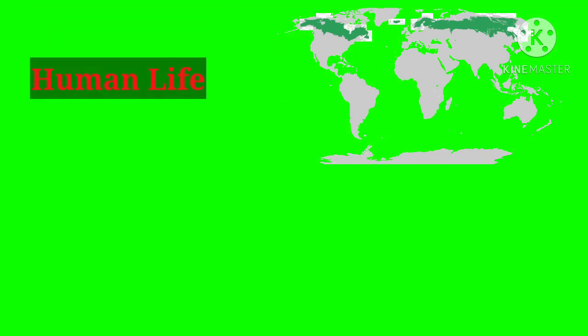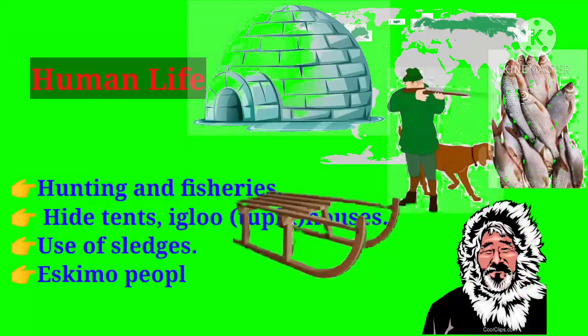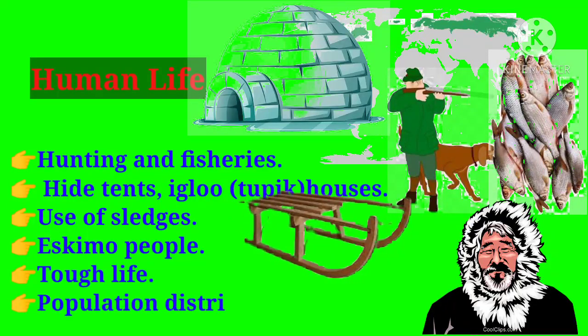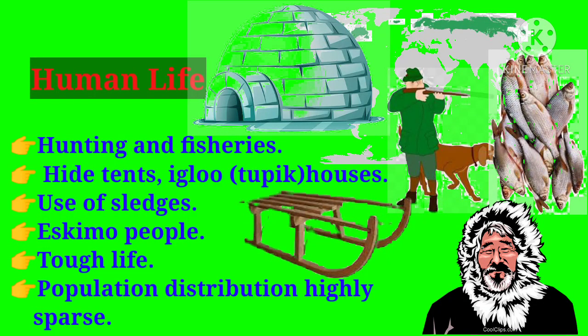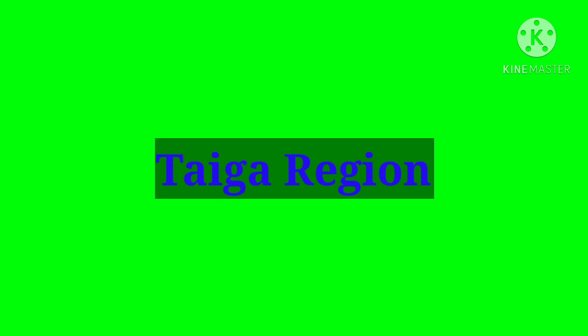Human life in the tundra region: people survive by doing hunting and fisheries. They live in hide tents and igloos, which are called cubic houses. They use sledges for transportation. The people are called Eskimos. Life here is very tough and the population distribution is highly sparse — meaning very few people live here.